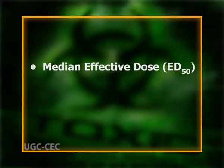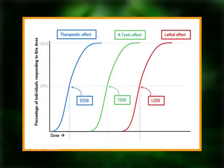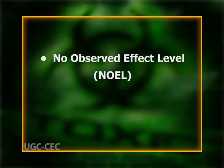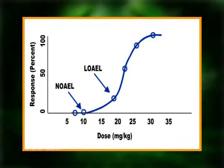Lethal Dose 50 (LD50) is the dose that will cause mortality in 50% of a population. The higher the LD50, the lower the acute toxicity; a highly toxic chemical will have a lower LD50. It is determined from exposure by any route other than inhalation. Median Effective Dose (ED50) causes a specific effect other than lethality in 50% of animals. No Observed Effect Level (NOEL) is the highest dose that does not cause a toxic effect; establishing NOEL requires multiple doses, a large population, and additional information.